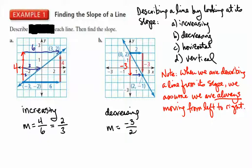We're either going to use the words increasing, decreasing, horizontal, or vertical. We always assume we're moving from left to right. And when we finish calculating the slope, we're also going to simplify that fraction — do not write it as a decimal, do not write it as a mixed number; write it as a simplified fraction. We'll go on to a couple more examples and conclude this video.